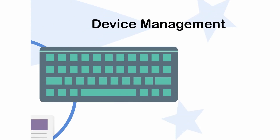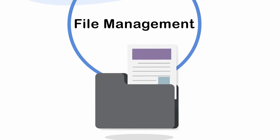Third is device management, where hardware management is carried out — which hardware is attached, what devices are connected, and what devices are required to execute a program or process. Fourth is file management — which files are open, which are closed, and which process needs what kind of files. Everything related to files is managed by the operating system, which acts as a manager.